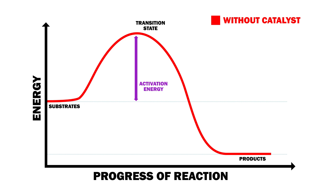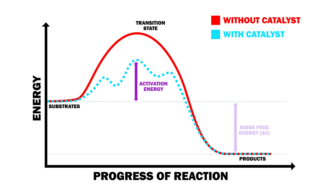Catalysts speed up reactions by lowering the activation energy of a reaction. The activation energy is the energy barrier that must be surpassed for a reaction to take place. Note that enzymes don't affect the Gibbs free energy, delta G, of the reaction, which is the thermodynamic potential of a reaction.